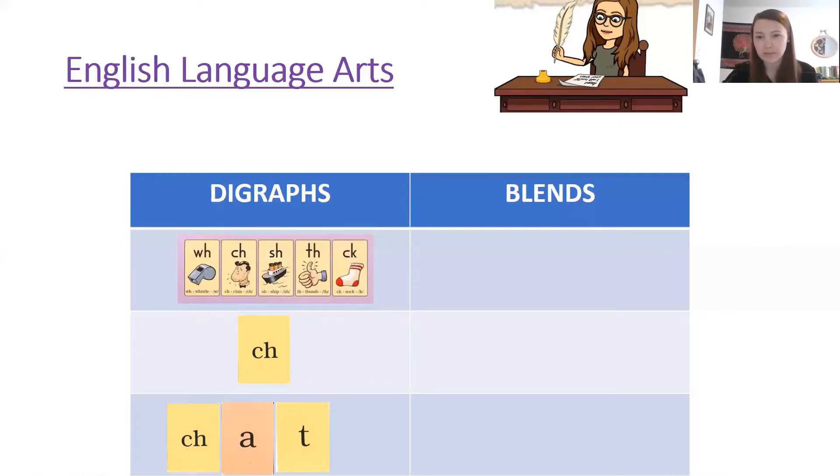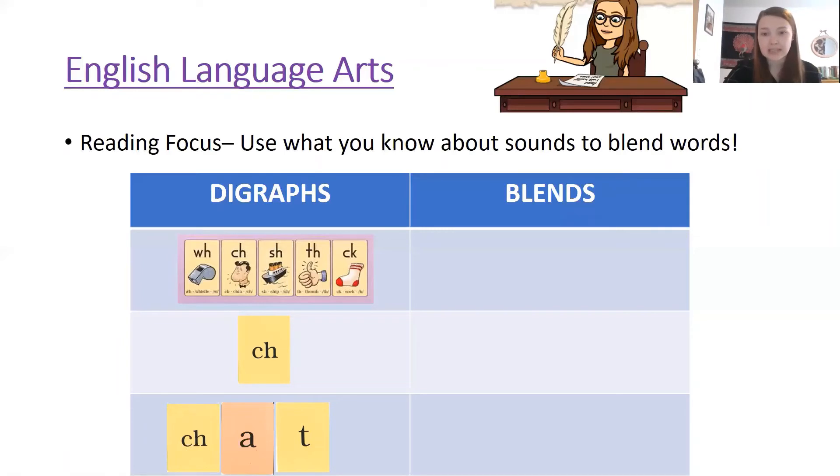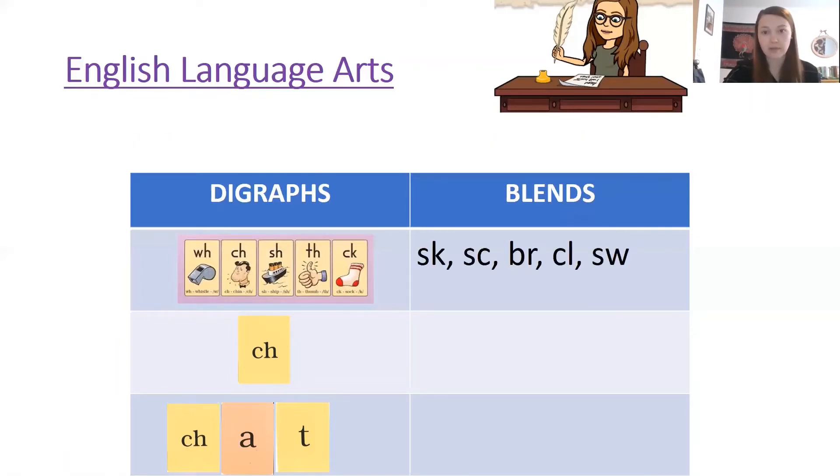But we also know that we learned about words with blends. And blends are also when we have two consonants that sit right next to each other in a word. Except these two consonants keep their own sounds. They don't come together to make one sound. They each have their own sound. So I don't have every blend that we've learned but I do have five examples of blends right up here in this table. Each of those words they blend together nicely but you can hear both letter sounds in each of those blends.